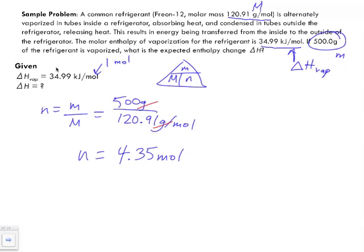So we're not using 34.99 kilojoules per mole, we actually need to use this now in conjunction with this new equation. So we're trying to find the enthalpy change, but we're using n number of moles multiplied by the enthalpy of vaporization. So our n moles is 4.35 moles, we're multiplying it by the molar enthalpy of vaporization, 34.99 kilojoules per mole.